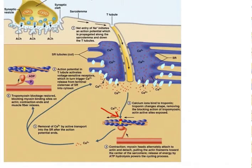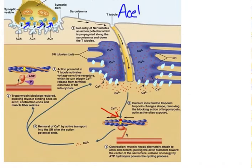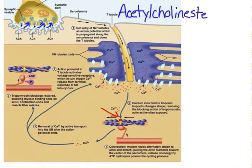There will be a reuptake of the acetylcholine back into the axon terminal through a process called endocytosis. Also, there is an enzyme called acetylcholinesterase which breaks down the acetylcholine left in the synaptic cleft.